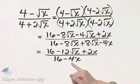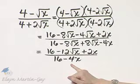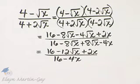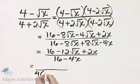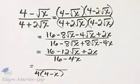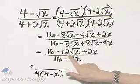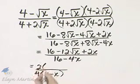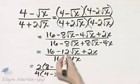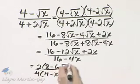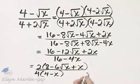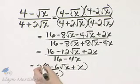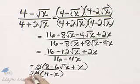Is there any other simplifying that can be done? Yes. Notice there's a common factor of 4 in the denominator, leaving 4 minus x. In the numerator, 16, 12, and 2 share a common factor of 2, leaving 8 minus 6 square root of x plus x. Now I can divide out a common factor of 2: 2 divided by 2 is 1, and 4 divided by 2 is 2.